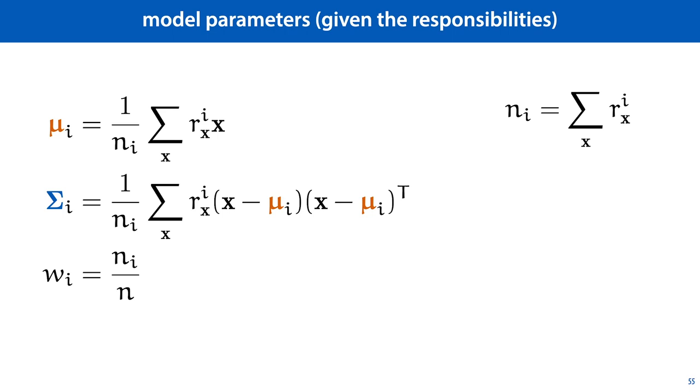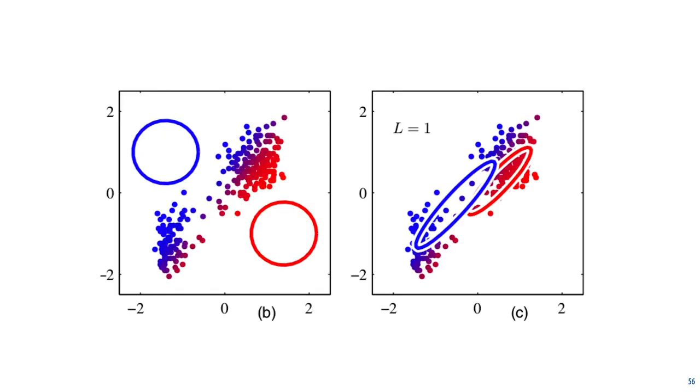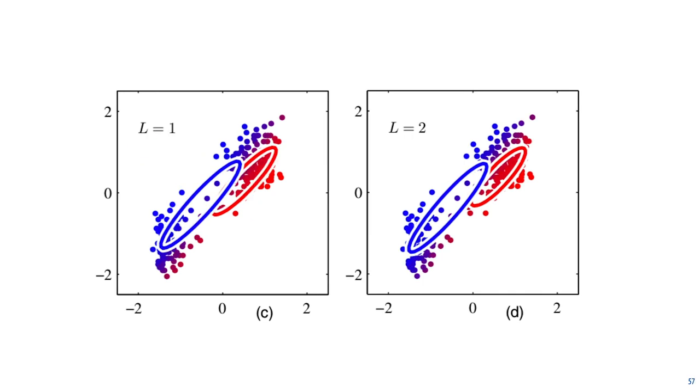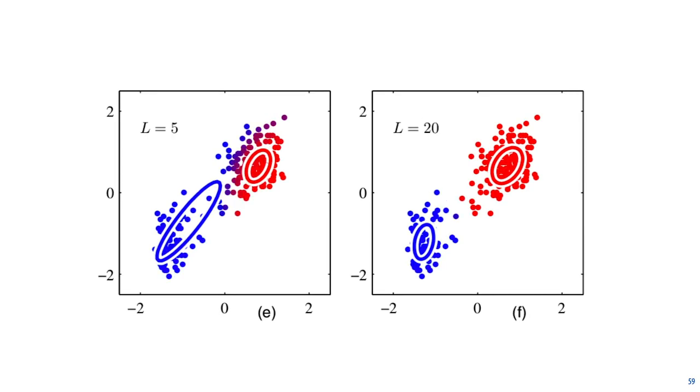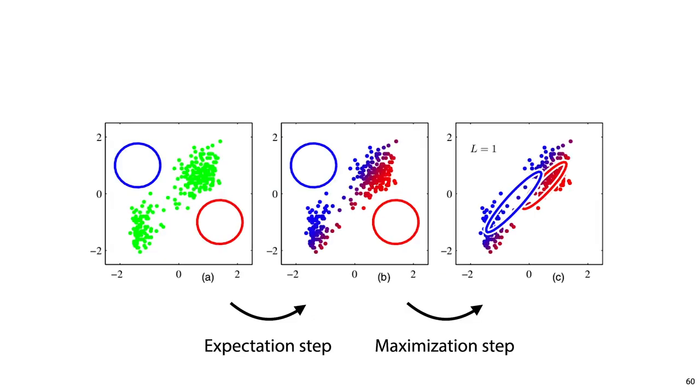And with this, we have the two steps of our alternating optimization worked out. Given some components, we can assign responsibilities. And given responsibilities, we can fit components. Here's the second step. On the left are the responsibilities we just assigned. And on the right is the result of the maximization step, where we discard the old components and fit new components to the weighted data. Using these, we recolor the points or reassign the responsibilities and refit the components. And we see that after a couple of iterations, the model converges to a good fit for the data.